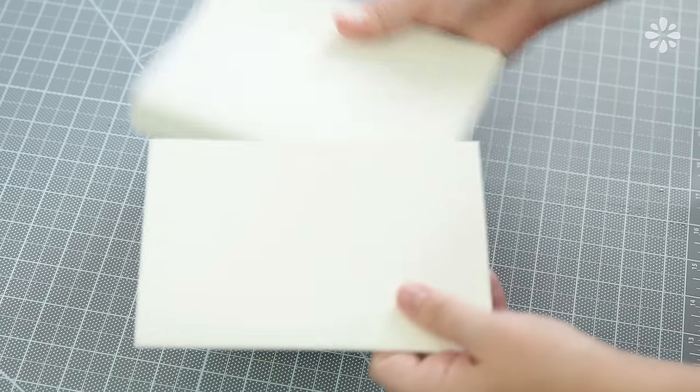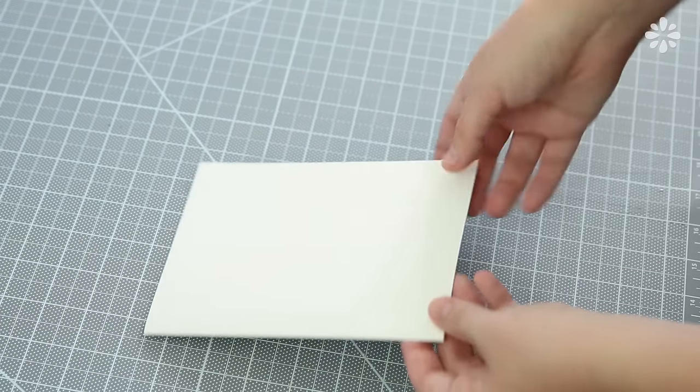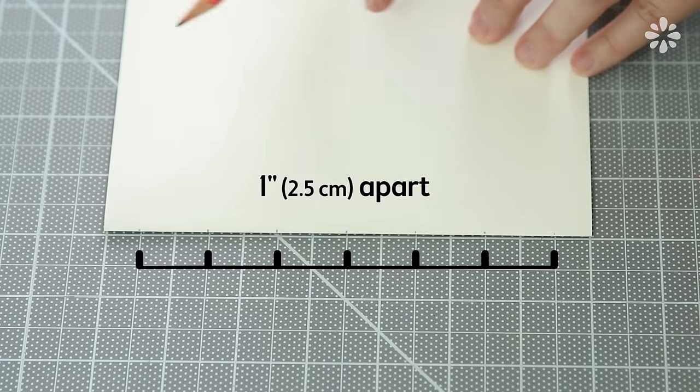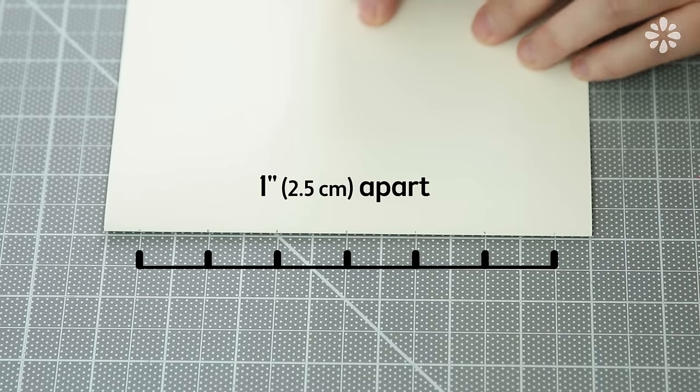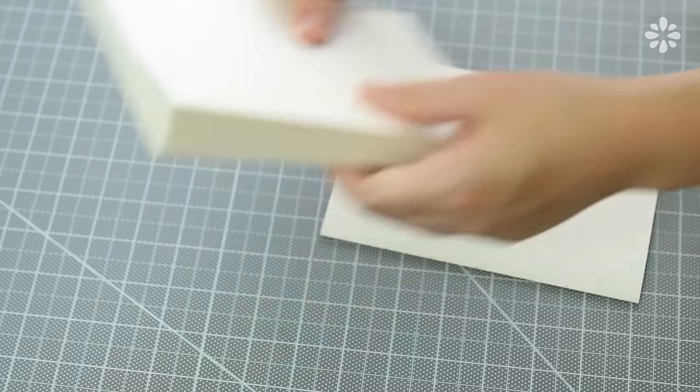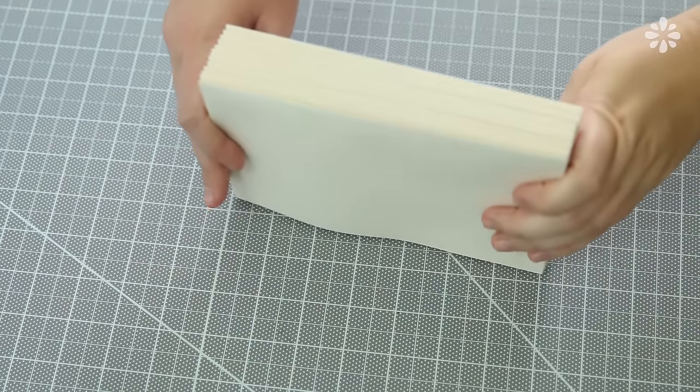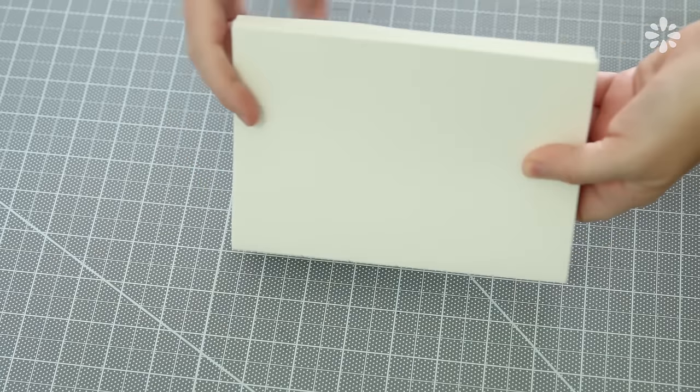And now it's time to mark the binding holes for all the signatures. On one signature, starting from the center, I marked off one inch increments. The amount and spacing of the binding holes is really up to you. This will be my template so I can mark off the rest of the signatures. Place it on top and stack it evenly with the rest of the signatures.